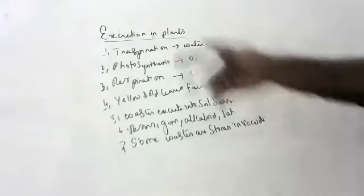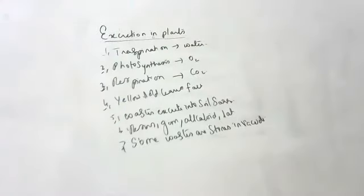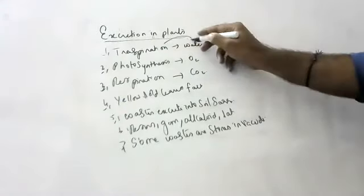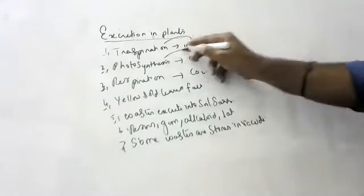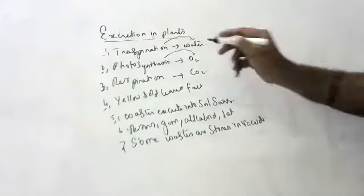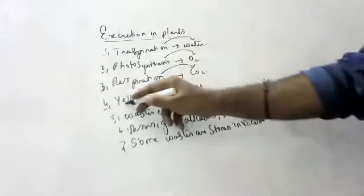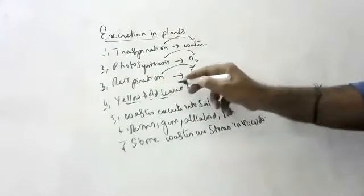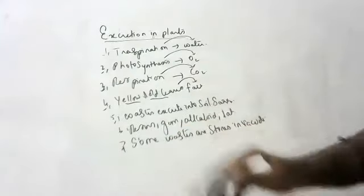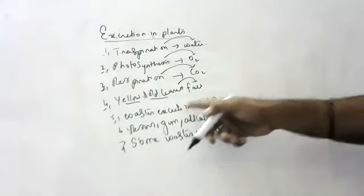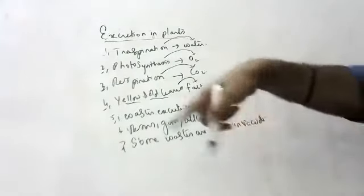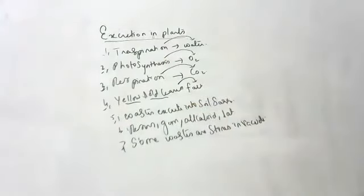These are the different modes of excretion in plants. In transpiration, they excrete water. Some yellow and old leaves, they fall out — that is a mode of excretion. Some ways are excreted into the soil surrounding the plant.